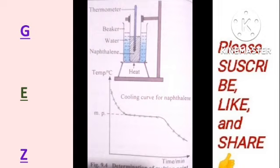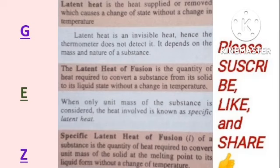As our example of heating and cooling of naphthalene demonstrates, there is no temperature change during heating and cooling at the melting and boiling points respectively. We might ask: where does the heat go? That heat which does not produce any temperature rise is called latent heat.